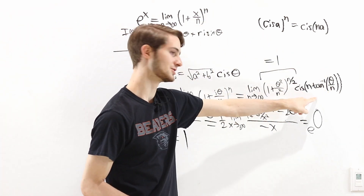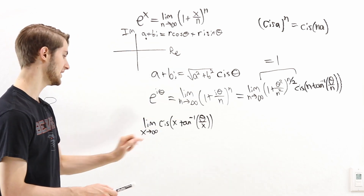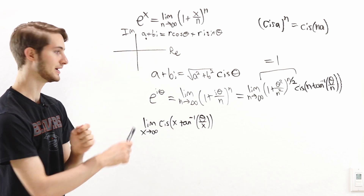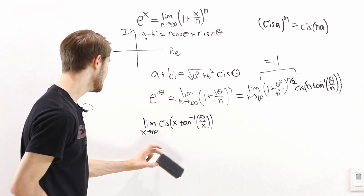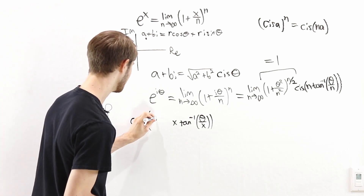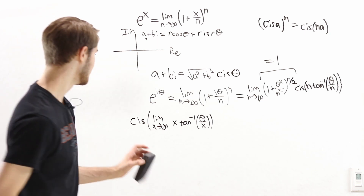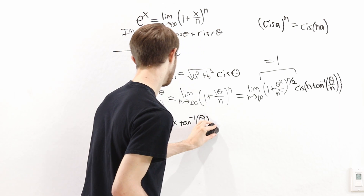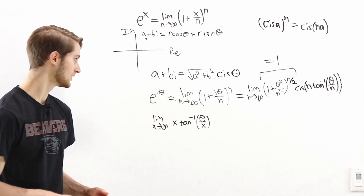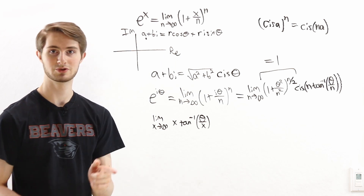Now we handle the second expression: the limit as x goes to infinity of cis of x times the inverse tangent of theta over x. The limit of cis of an expression equals cis of the limit, so this is cis of the limit as x goes to infinity of x times arctangent of theta over x. Plugging in x going to infinity, we get infinity times arctangent of theta over infinity. Since arctangent of 0 is 0, this is another infinity times 0 situation, so we try L'Hôpital's Rule.